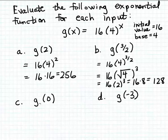Now let's try evaluating g of 0. This is going to be 16 times 4 to the 0th power. Remember, whenever you take a real number other than 0 and raise it to the 0th power, the result is always 1. So 4 to the 0th power is 1, so we have 16 times 1, which is 16.